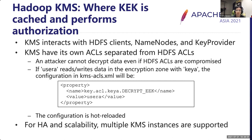Here's an example of the ACL configuration. If user A wants to decrypt data in an HDFS encryption zone where the data encryption key is encrypted by key A, you need to set the key ACL property 'keyA.DECRYPT_EEK'. Multiple KMS instances are supported for HA and scalability.